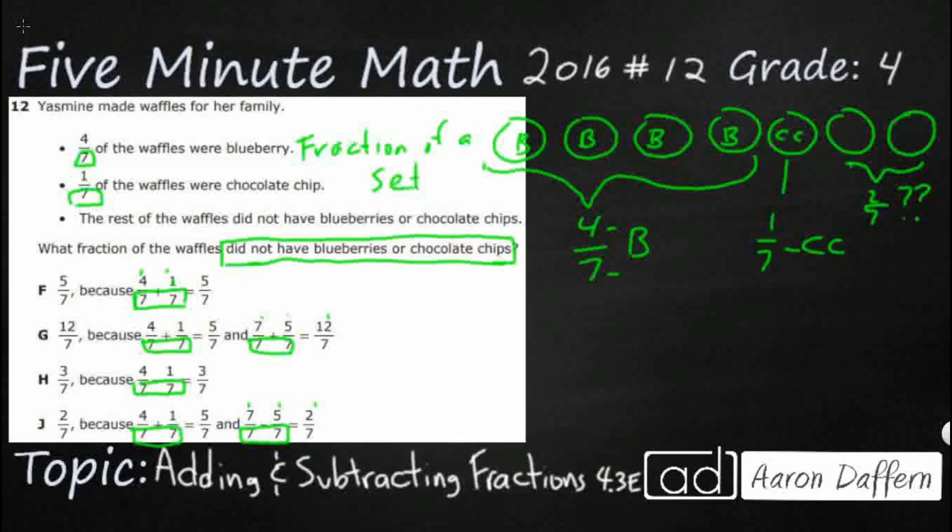Now, let's look and see what they did. Five sevenths because you've got four sevenths and one seventh. This is my blueberry, and this is my chocolate chips. Blueberry plus chocolate chips does get you five sevenths, but that's how many have blueberries and chocolate chips. I'm looking for how many do not have blueberries and chocolate chips. That's not going to work for me.